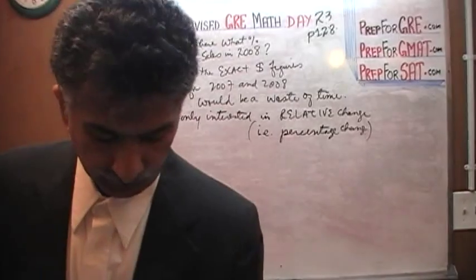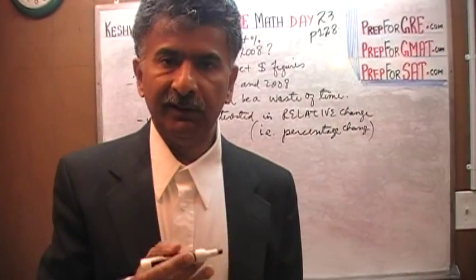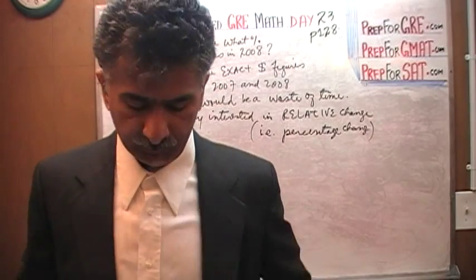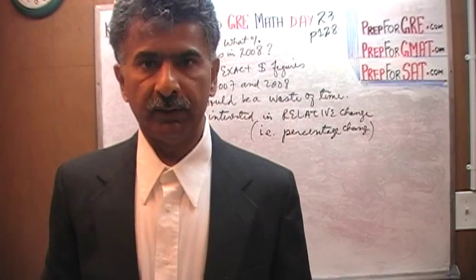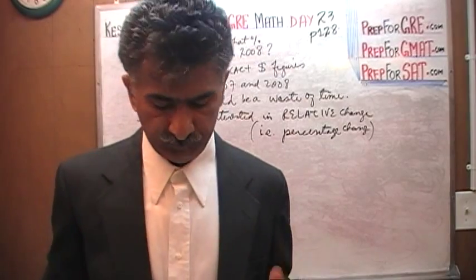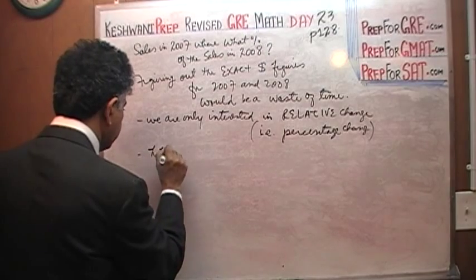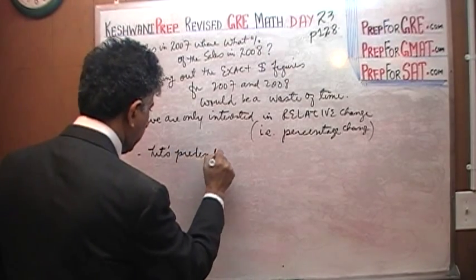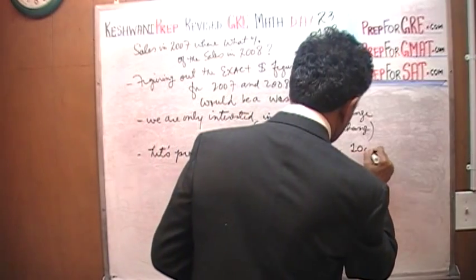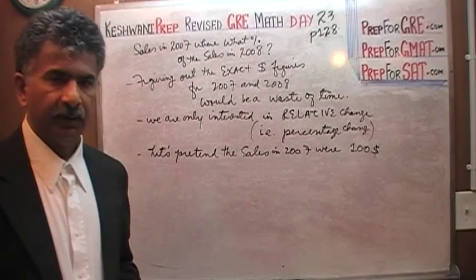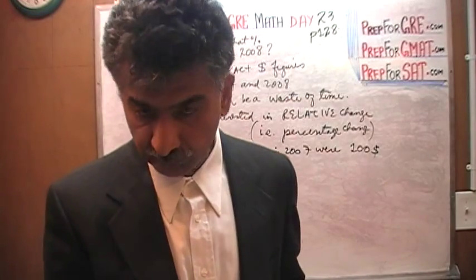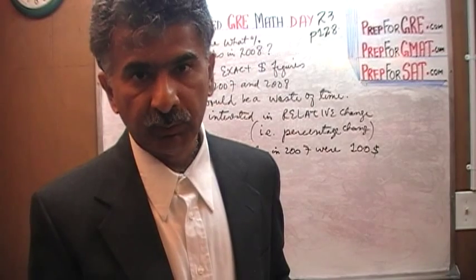So the thing to do here is to plug in a number for 2007. We want to see: the sales in 2007 were what percentage of the sales in 2008? Since it is a percentage problem, a nice easy number to plug in is 100. Let's pretend the sales in 2007 were 100 dollars. For the chart, we turn to page 127.